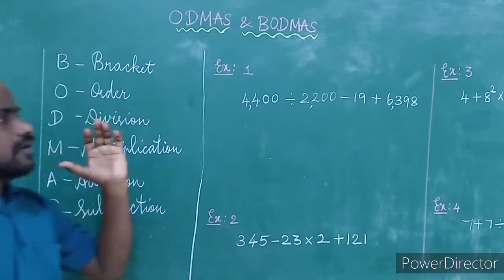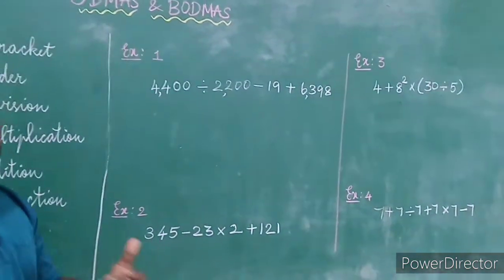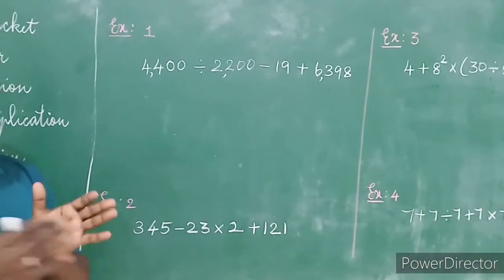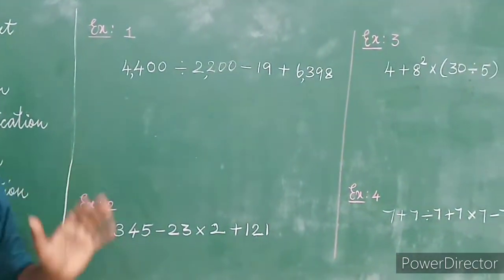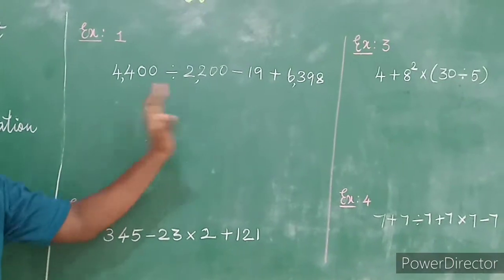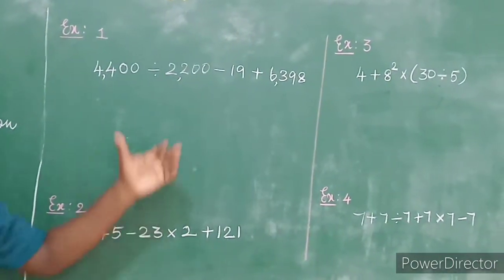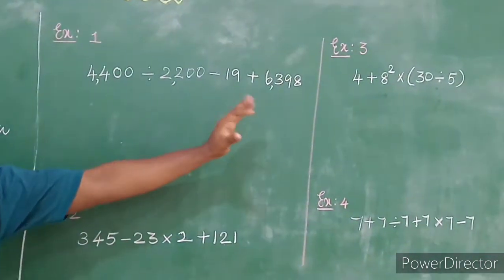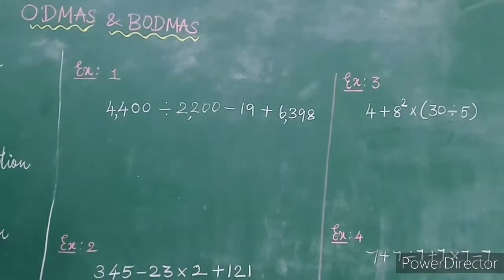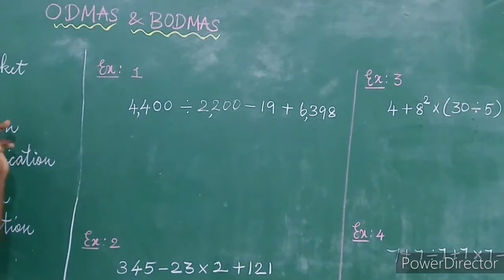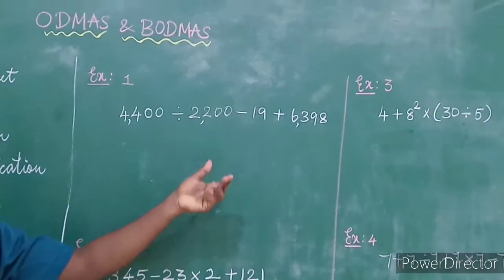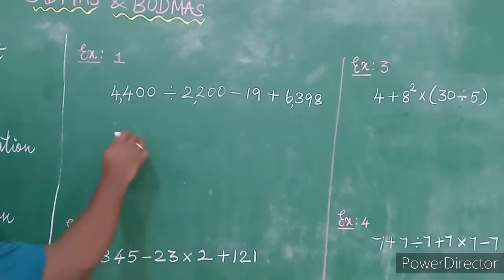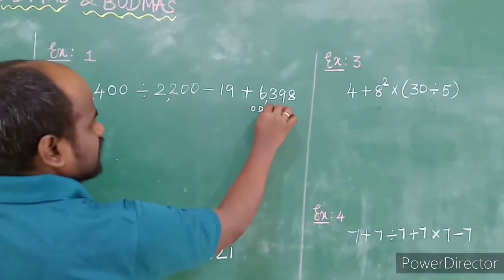In the previous video I explained some basic questions. Here it is a little more complicated. When there is no bracket, we use ODMAS. When there is a bracket, we use BODMAS. So: with bracket use BODMAS, without bracket use ODMAS.